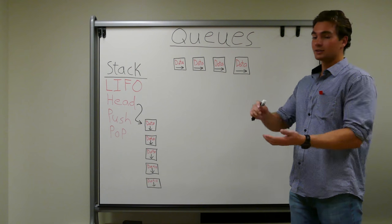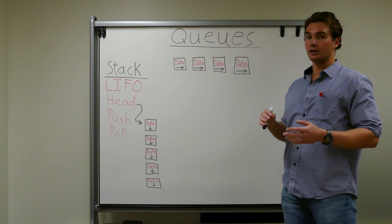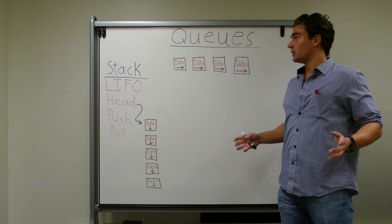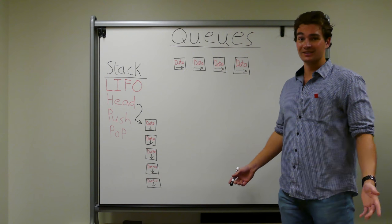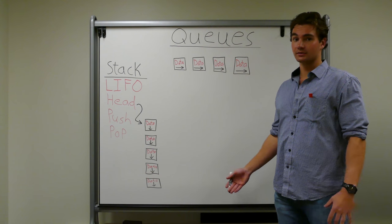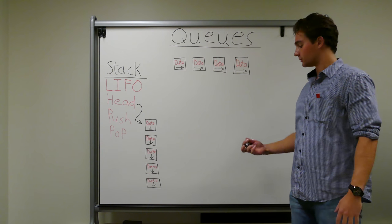Queues, so stacks are vertical. Queues, on the other hand, are horizontal. And we deal with queues our whole lives as humans. We have to wait in lines for a lot of things, a lot of services.